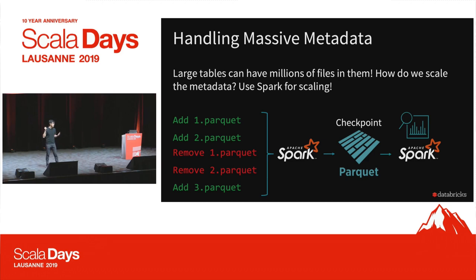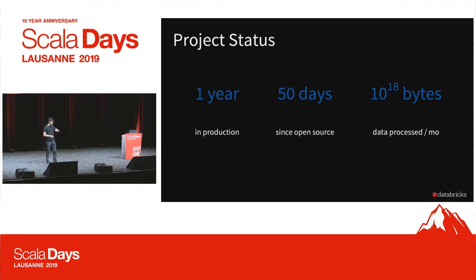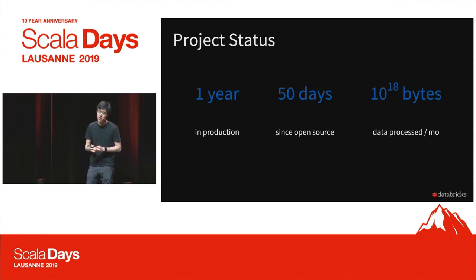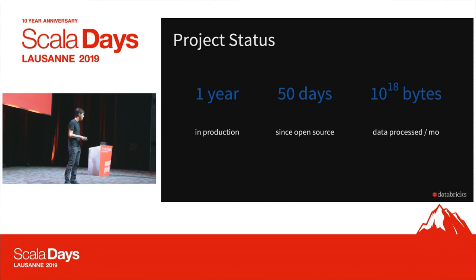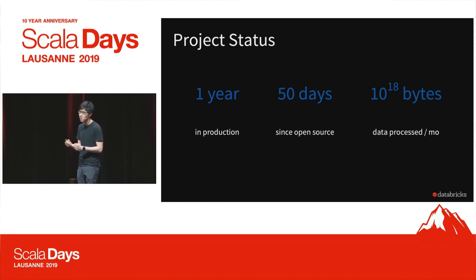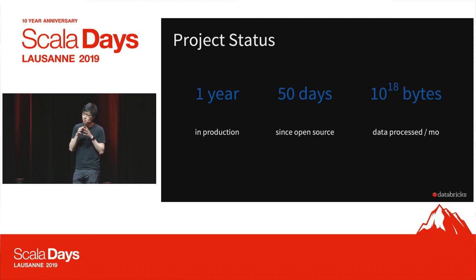This is how we can process billions of files in a single table and support 100-petabyte tables, because the metadata is no longer a bottleneck. Delta is basically one year old in production at Databricks. We recently open-sourced it about two months ago. Every month right now it's processing an exabyte of data on the Databricks platform, and the number is increasing very quickly. The thing is production-ready and solves a lot of the data engineering problems, so we decided it doesn't just benefit Databricks customers — we're going to create an open source version to make sure it works for everybody.